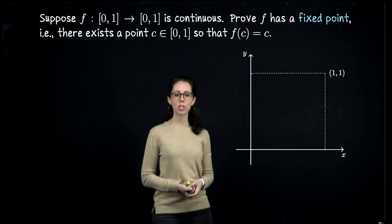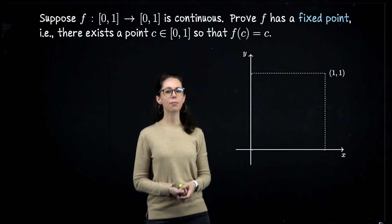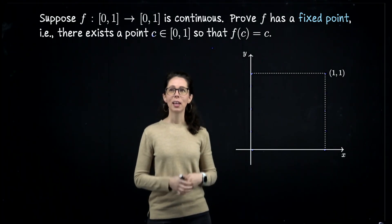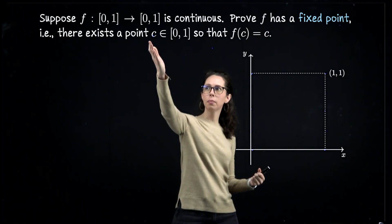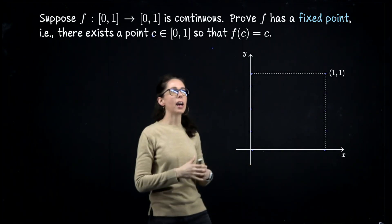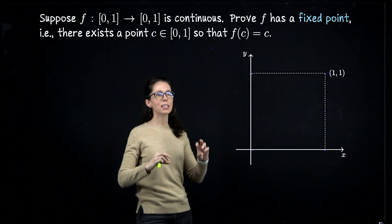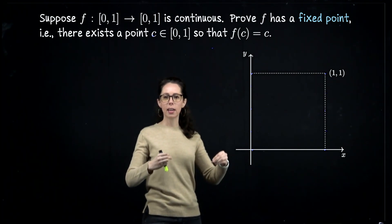With just this information, we would like to prove that f must have a fixed point, at least one. Such a point, which I'll call c, is fixed under the action of f, which means that f sends c back to c.